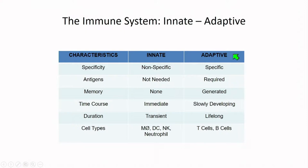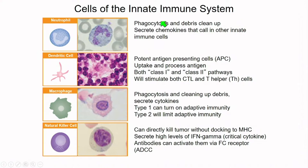The adaptive immune system is specific — it requires antigen stimulation, generates memory, is slowly developing, and has a lifelong duration. Its main cells are T cells and B cells.